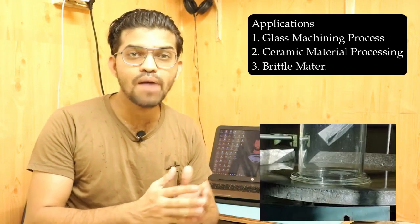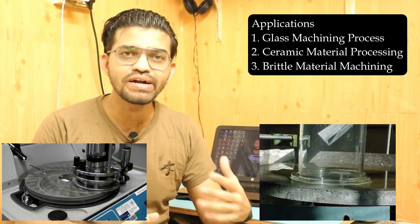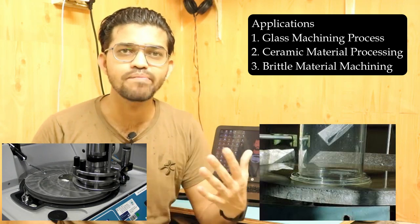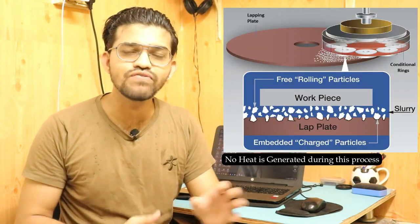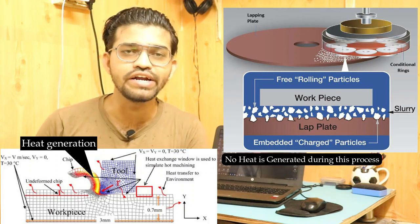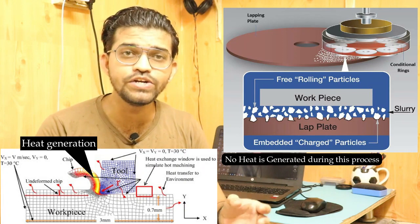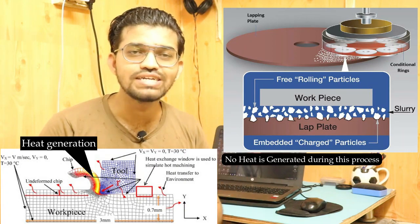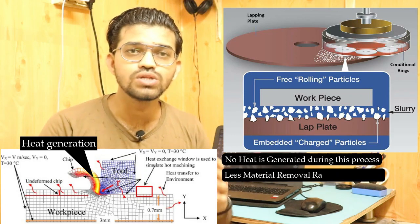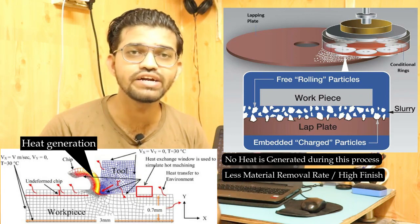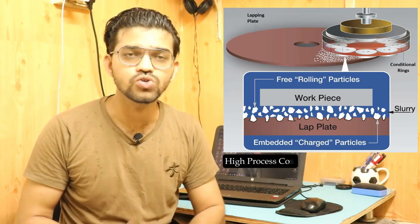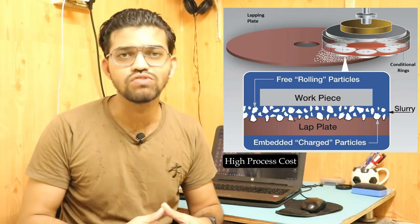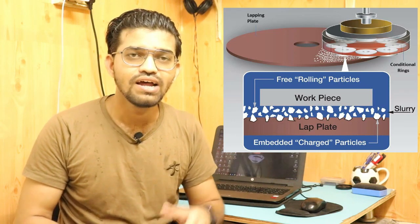The lapping process is used in glass machining, ceramic materials machining, and brittle material machining — these are some of its applications. This process does not produce any heat as in conventional machining, so there are no stresses induced in the workpiece. The material removal rate in lapping is very low, which is why no heat is generated. However, this process is very costly, which is a disadvantage of the lapping process.